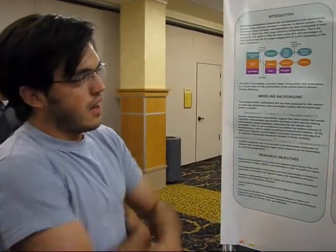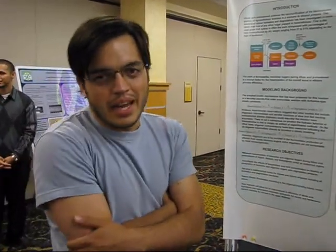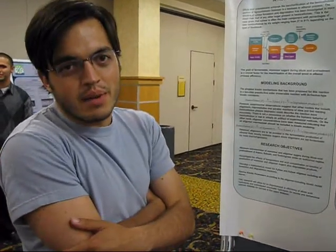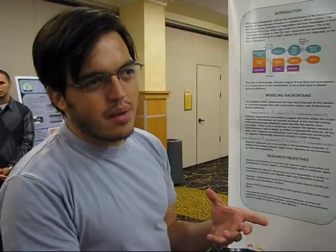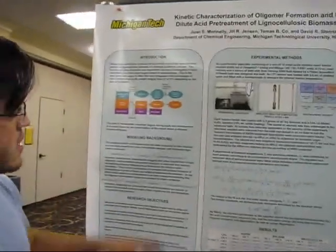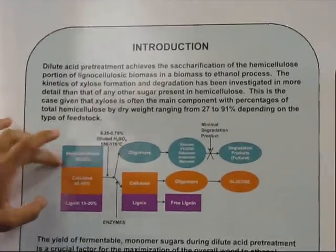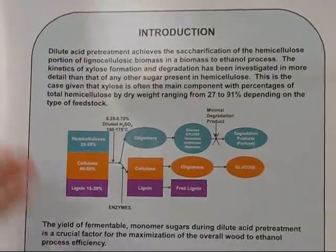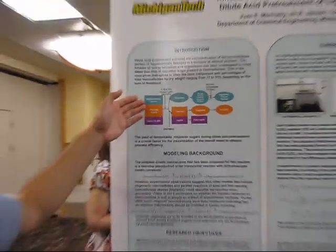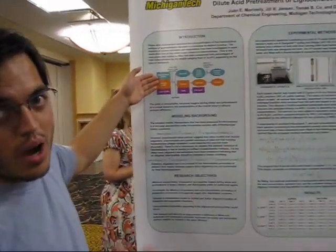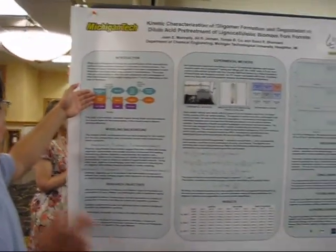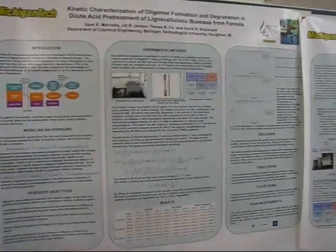What we're trying to do here is to model the kinetic behavior of the dilute acid pretreatment. Dilute acid pretreatment is used to degrade the biomass so the subsequent enzyme hydrolysis step goes at a faster rate. Biomass is divided into three different fractions: hemicellulose, cellulose, and lignin. The dilute acid pretreatment hydrolyzes the hemicellulose portion into monomeric sugars that can then be fermented into a value-added product.